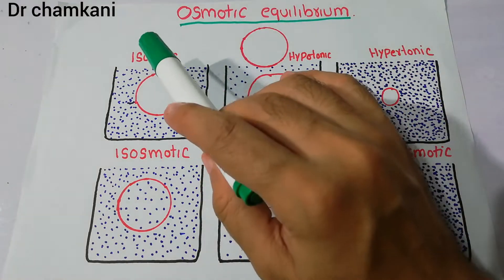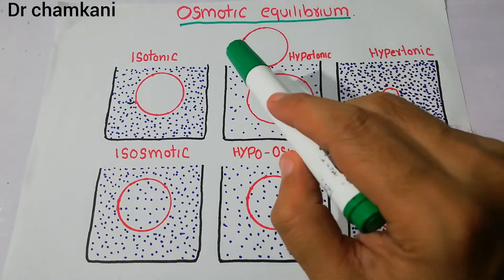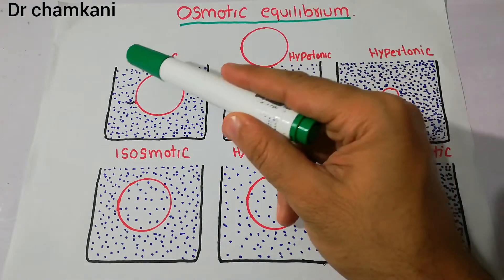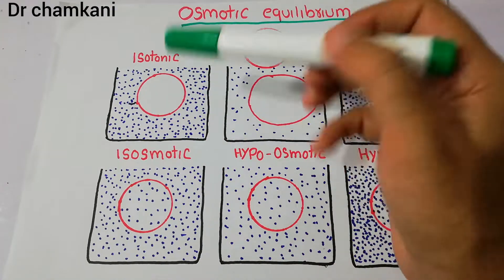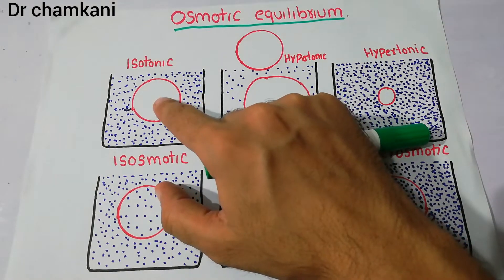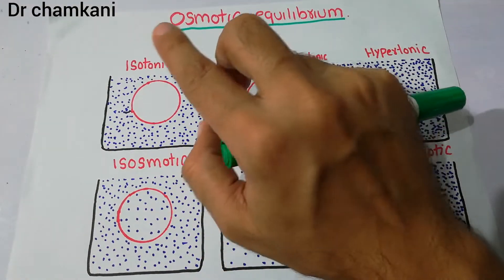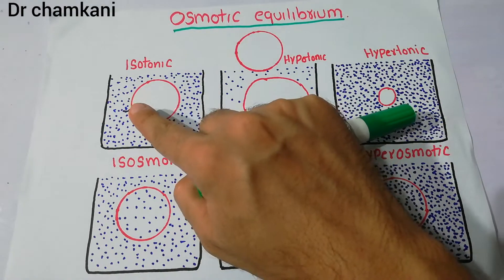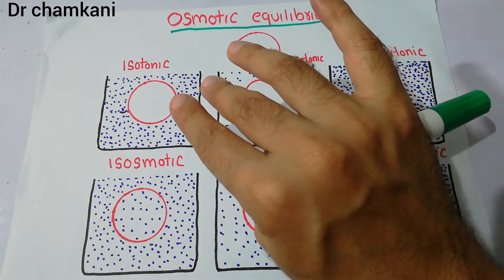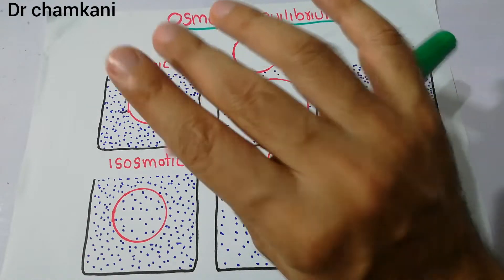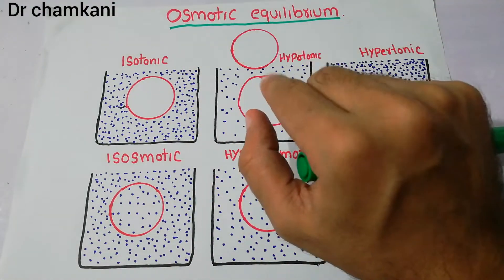When considering isotonic, hypotonic, and hypertonic fluids, we assume that the solutes present in these fluids are impermeable - the cell membrane does not allow any solute to enter. Only water can enter the cell. But in isotonic fluid, even water will not enter or leave the cell because there is no gradient - there is no difference in the osmolarities of the fluid inside and outside the cell.